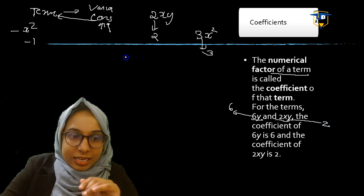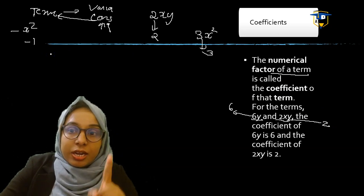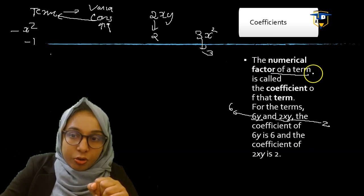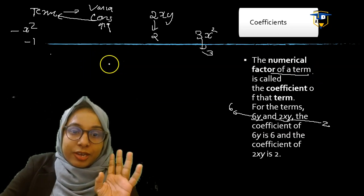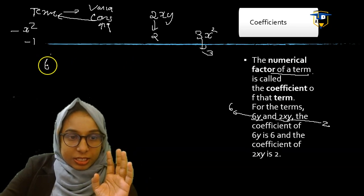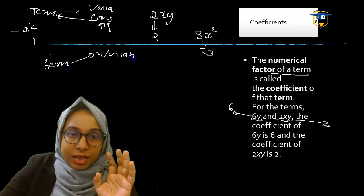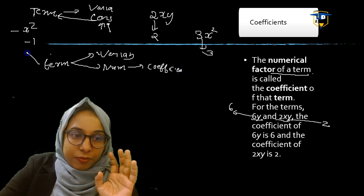So the numerical factor of a term is called the coefficient. Terms contain variable factors and numerical factors. The numerical factor is the coefficient. When these factors are multiplied we get a term, and the summation of terms gives us algebraic expressions.